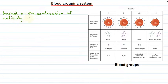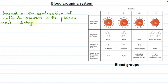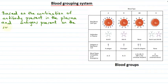Based on the combination of antibodies that are present in the plasma and the antigens — these antigens being responsible for producing specific antibodies — that are present on the surface of red blood cells, that is on the surface of RBCs, human blood can be classified into different groups.